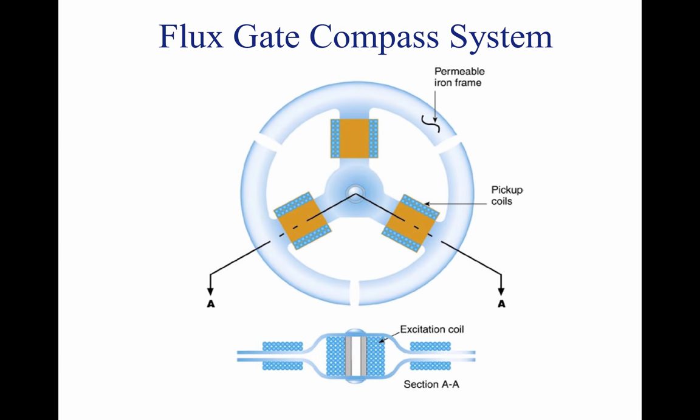The lines of flux in the Earth's magnetic field have two basic characteristics: a magnet aligns with them, and an electrical current is induced or generated in any wire crossed by them. The flux gate compass that drives slave gyros uses the characteristic of current induction. The flux valve is a small, segmented ring made of soft iron that readily accepts lines of magnetic flux. An electrical coil is wound around each of the three legs to accept the current induced in this ring by the Earth's magnetic field.